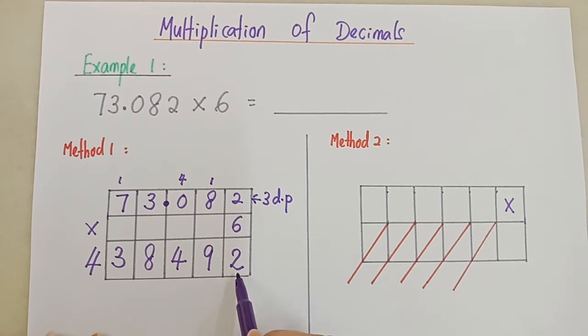So you count from the back: 1, 2, 3. 3 decimal places. So you put a point. So the answer is 438.492.